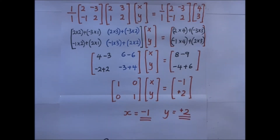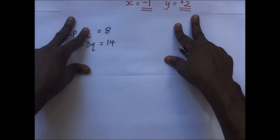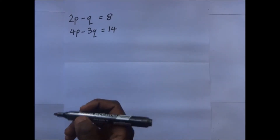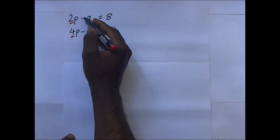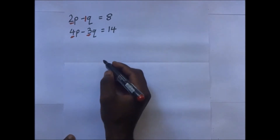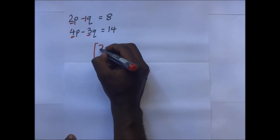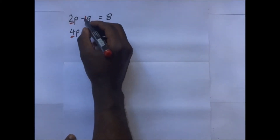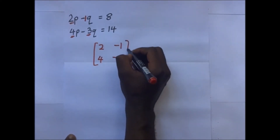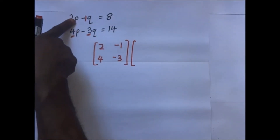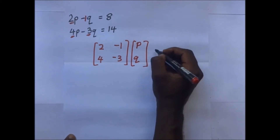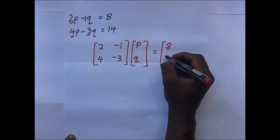That is how we solve a simultaneous equation using the matrix method. We'll do one more example. We have 2p minus q equals 8 and 4p minus 3q equals 14. We need to find the values of p and q. Extracting the matrix: the matrix is [2, -1; 4, -3], multiplied by [p; q] equals [8; 14].